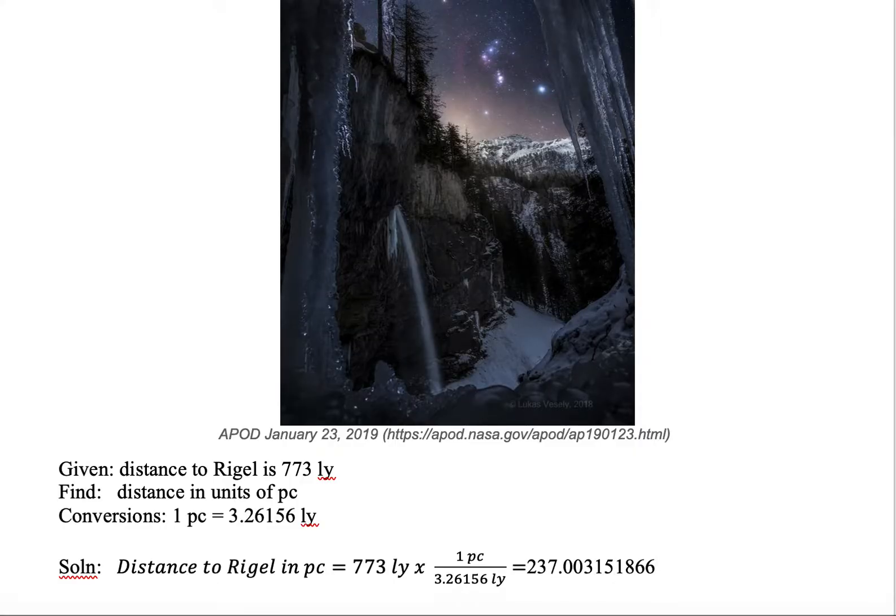Now what unit to put? Well, let's go look at our units. We have light year in the numerator, light year in the denominator, they cancel out. The only thing left in the numerator is parsecs, so our unit is parsec.